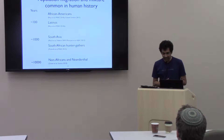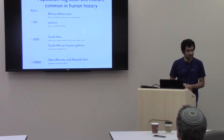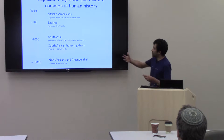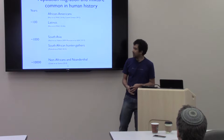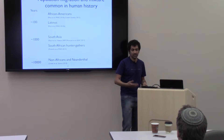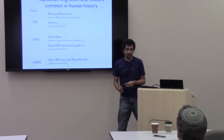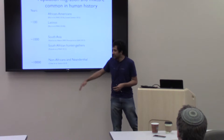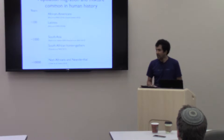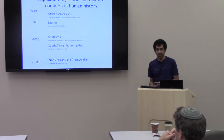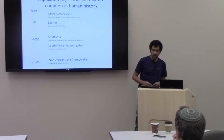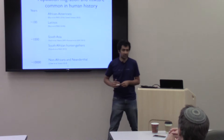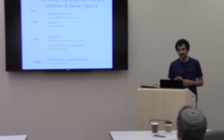As we get more and more genome sequence data, we understand that admixture is very, very common. There's been admixture within the last hundreds of years in populations like African-Americans and Latinos, but it's not just a recent phenomenon. Going back thousands of years, we know of admixtures in South Asians and South African hunter-gatherers. And going back tens of thousands of years, we now know there's been admixture between highly diverged populations — modern humans and archaic humans like the Neanderthals and the Denisovans. The focus of my talk today is on these deep admixture events, what we call archaic admixture.